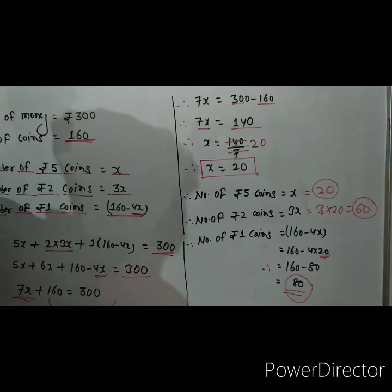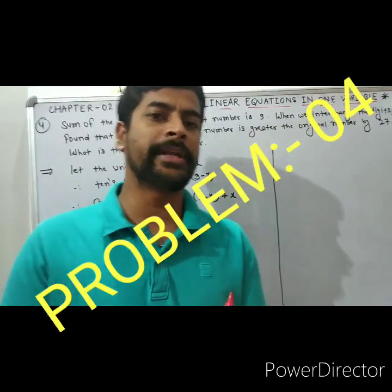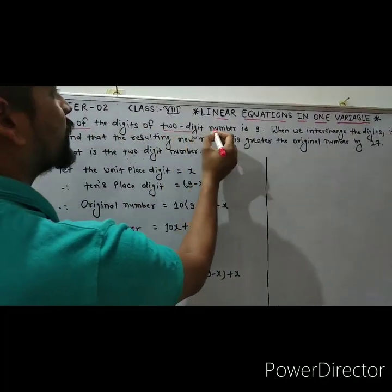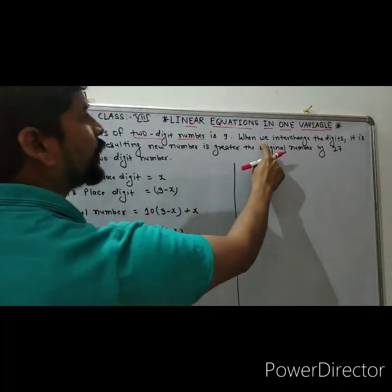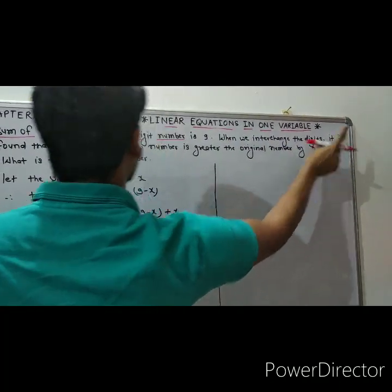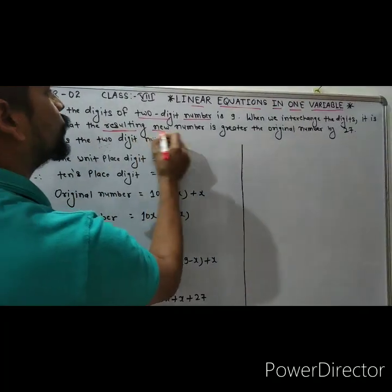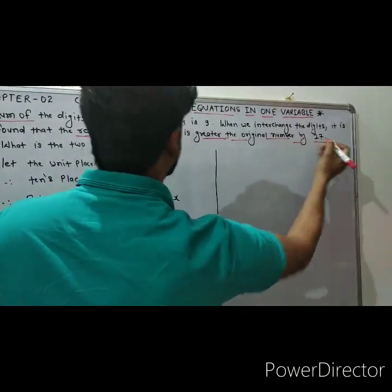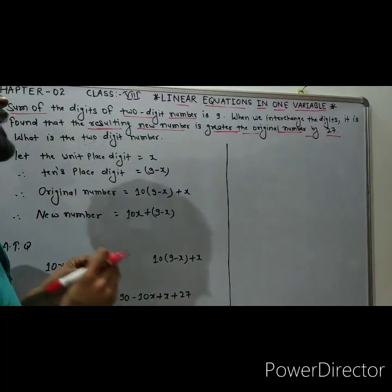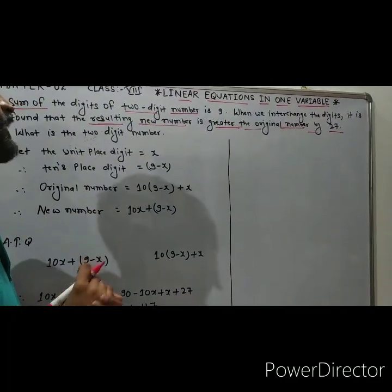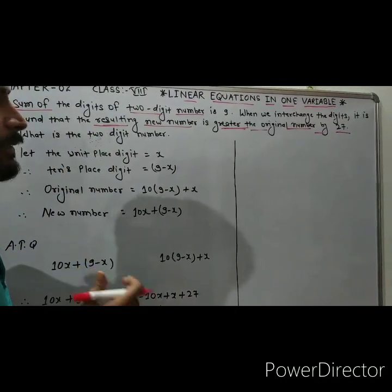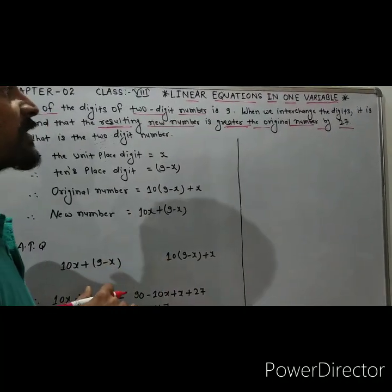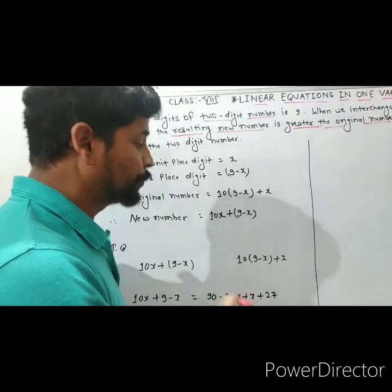Now look at question number 4: Sum of the digits of a two-digit number is 9. When we interchange the digits, it is found that the resulting new number is greater than the original number by 27. This is a very very important question of class 8 standard, and this type of question always comes in your examination. Before solving, I would like to explain some basic concept of two-digit numbers.